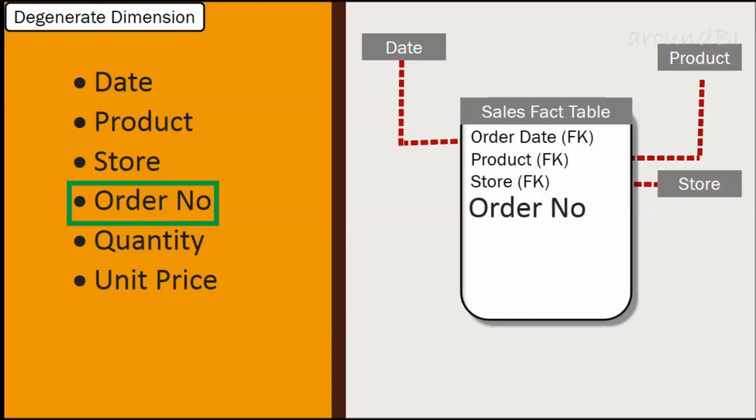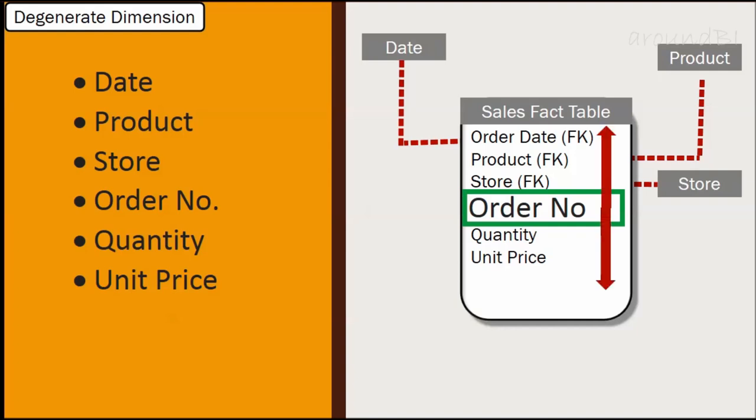If you see our final fact table structure, it would be like this: date key, product key, store key, order number, quantity and unit price. In the fact table, the degenerate dimension generally sits right after the dimensional keys and right before the normal numeric facts.